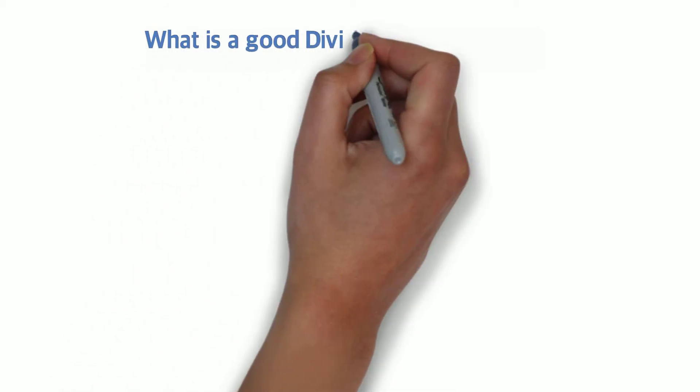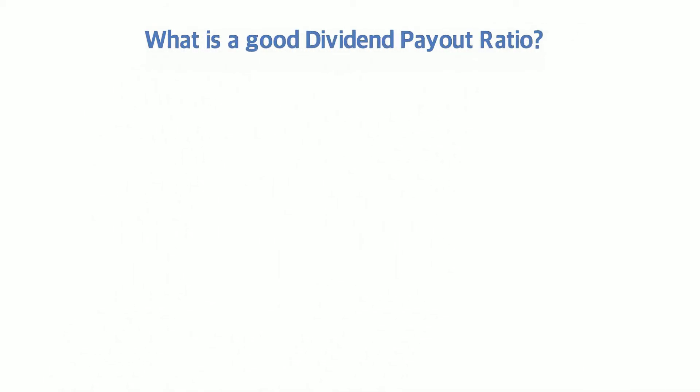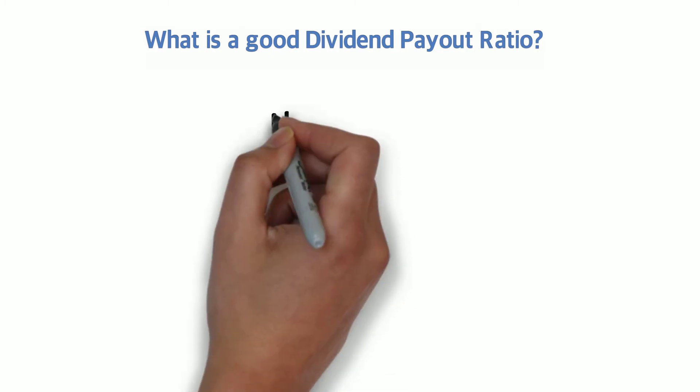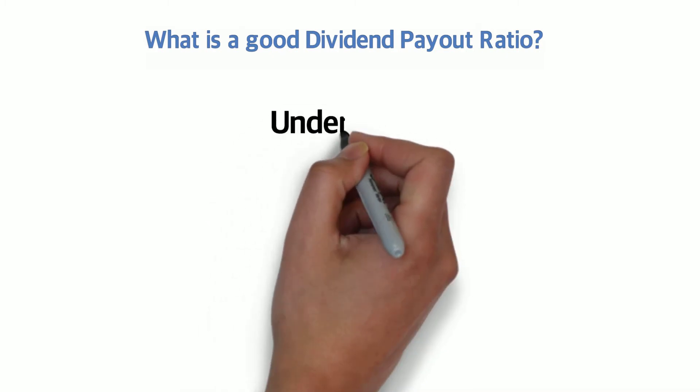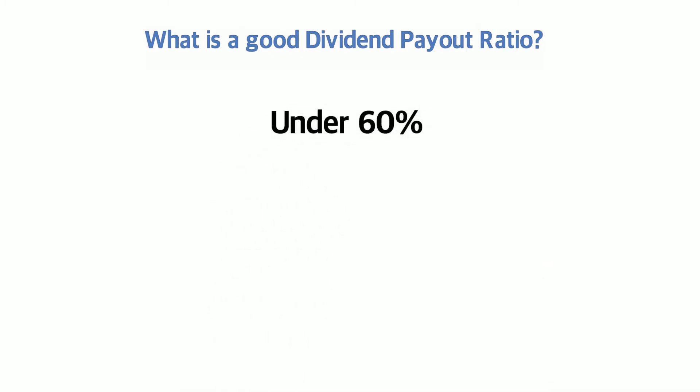So what is a good dividend payout ratio? Well, it depends on the industry a company is in and its historical payout ratio. On average, I look for a payout ratio under 60%, but there are always exceptions.